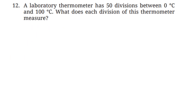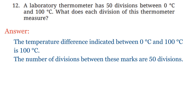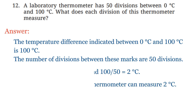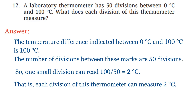Question 12: A laboratory thermometer has 50 divisions between 0°C and 100°C. What does each division measure? The temperature difference between 0°C and 100°C is 100°C, and the number of divisions is 50. So one small division reads 100 ÷ 50 = 2°C. That is, each division of this thermometer can measure 2°C precisely.